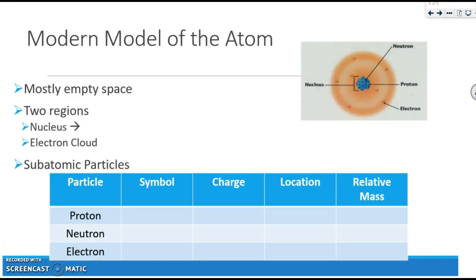The modern model of the atom is mostly empty space. You can see it there in the diagram. There are two major regions. We have the nucleus, which hopefully you already know, contains your protons and your neutrons. And we have the electron cloud, which is where the electrons are found.